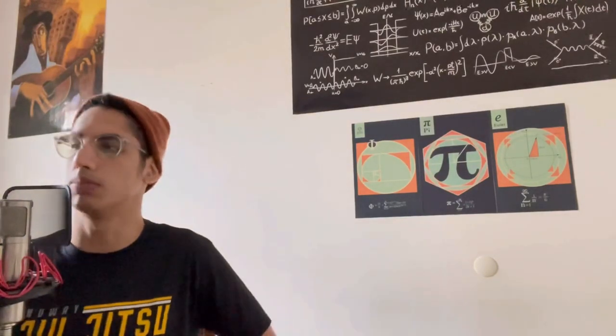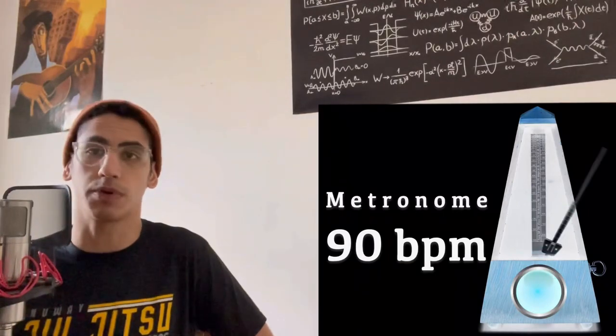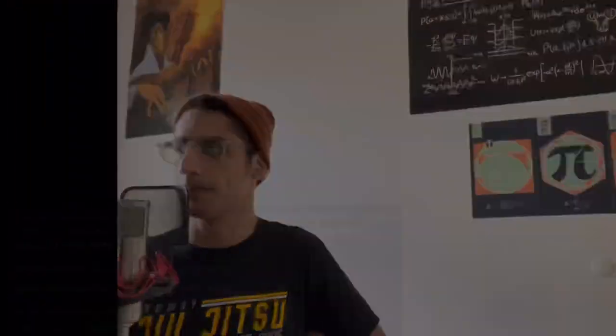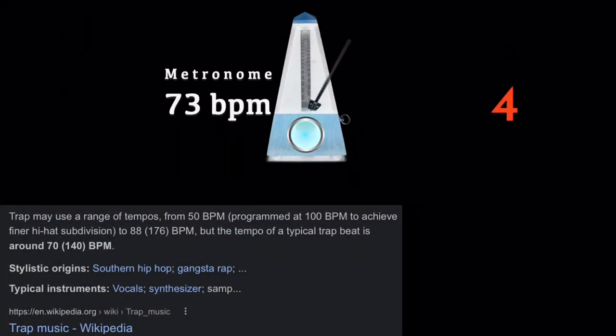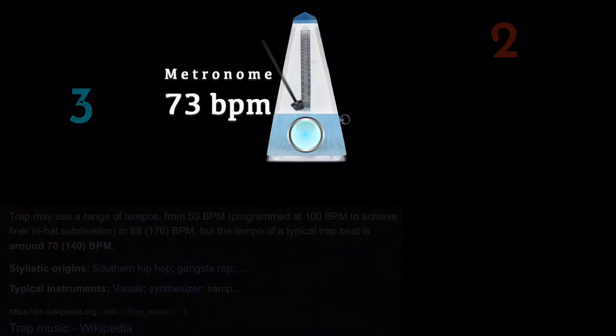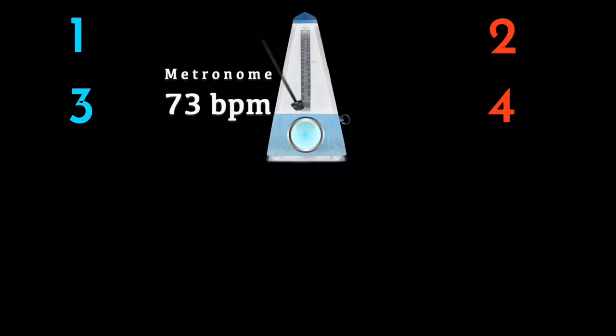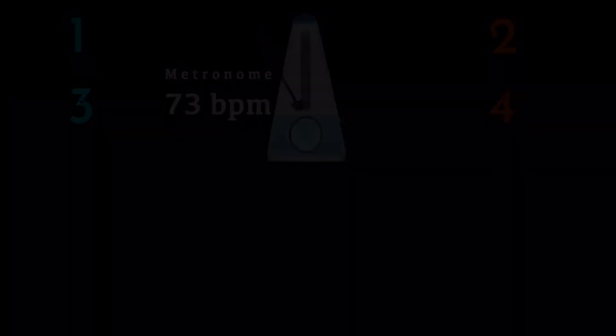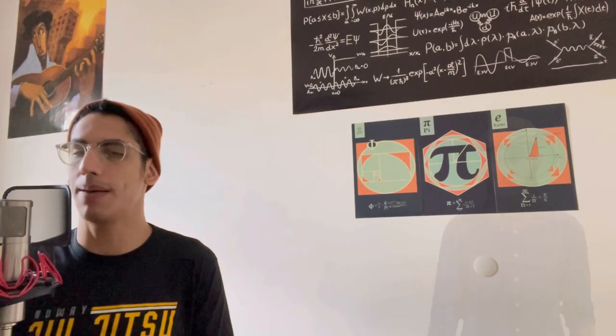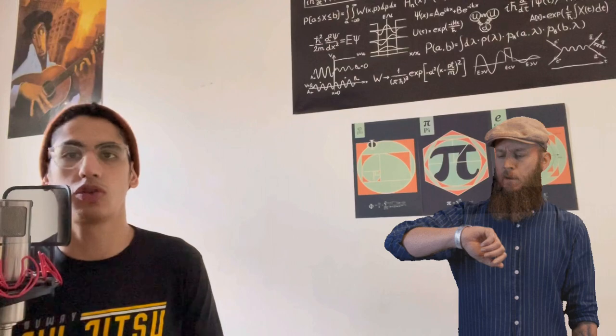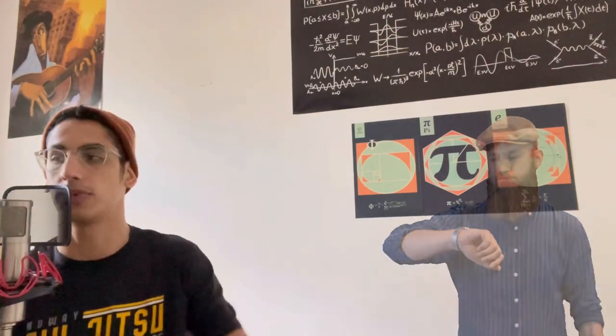Old school boom bap beats are about 90 beats per minute, or 180 beats per minute if we think about double time. For a beat that's around 70-73 beats per minute, there's a big delay between each beat. That's a lot of space for you to not be dropping rhymes. If we consider the fact from the last video that one of the principles of rap is to feel the four and to drop your rhymes on the count, what happens if the beat is so slow that there's too much space in between the counts?